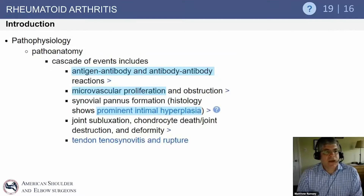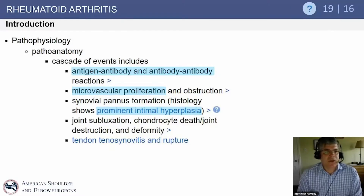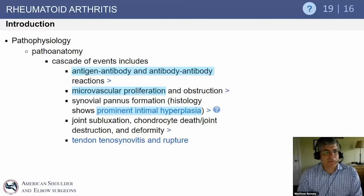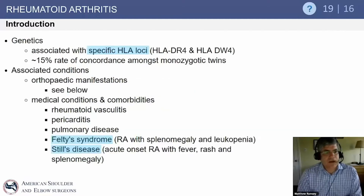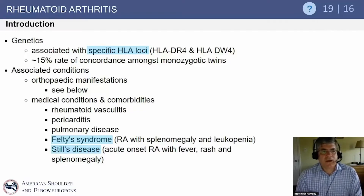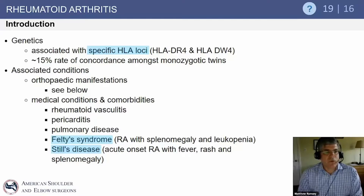The pathoanatomy cascade involves antigen-antibody and antibody-antibody reactions, proliferation at the microvascular level, and intimal hyperplasia, which leads to the synovial response, subluxation of the joint, chondrocyte death with cartilage destruction, and secondary bony changes. There are specific genetic loci — HLA-DR4 and HLA-DW4 — prominent in these patients, along with important associated medical conditions.